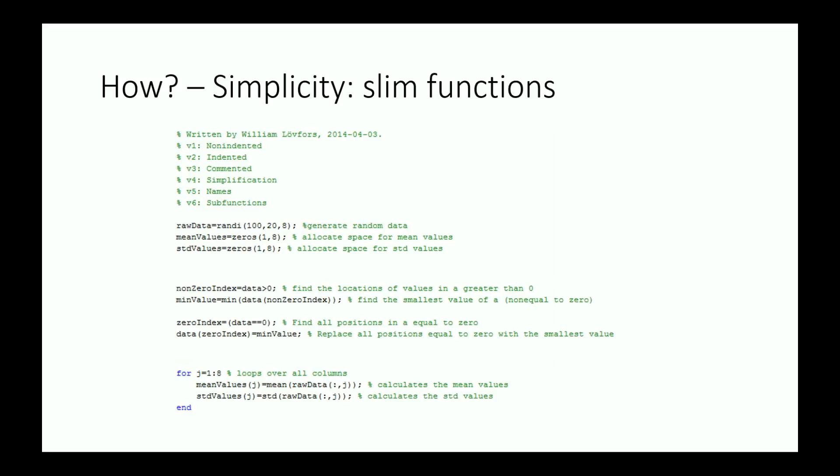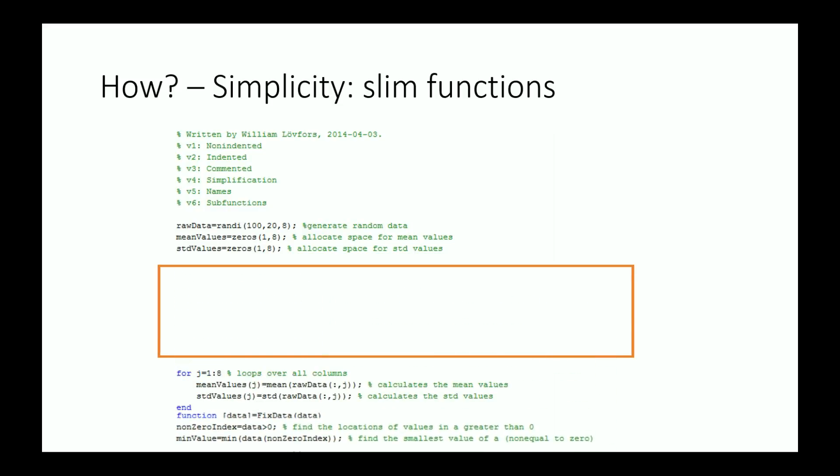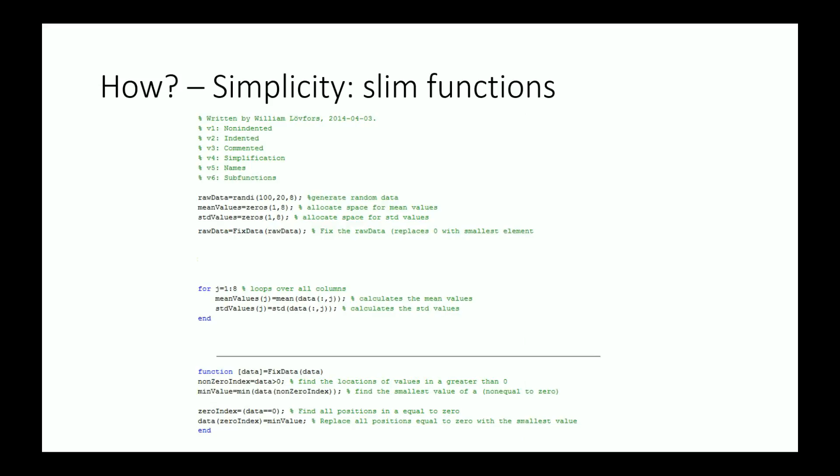And we should try to have the function just do a single task. So if you look here, what we do with these lines of code is that we replace all zero values in the data with the lowest value greater than zero. And this can easily be made into its own function. So let's make it into a function and move it away from the rest of the code. And insert a function call instead. See? Much easier to see and understand. So again, now I'll restructure the code a bit for the next step. And it's still exactly the same.